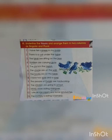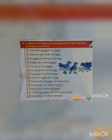In each sentence, identify the noun words and underline them, then arrange as singular or plural. First sentence: 'I have 10 rupees in my purse.' — nouns: rupees, purse. Second: 'There is a cat under the table.' — nouns: cat, table. Third: 'The bats are sitting on the tree.' — nouns: bats, tree. Fourth: 'Soldiers are carrying guns.' — nouns: soldiers, guns. Fifth: 'The ink is in the ink pot.' — nouns: ink, ink pot.